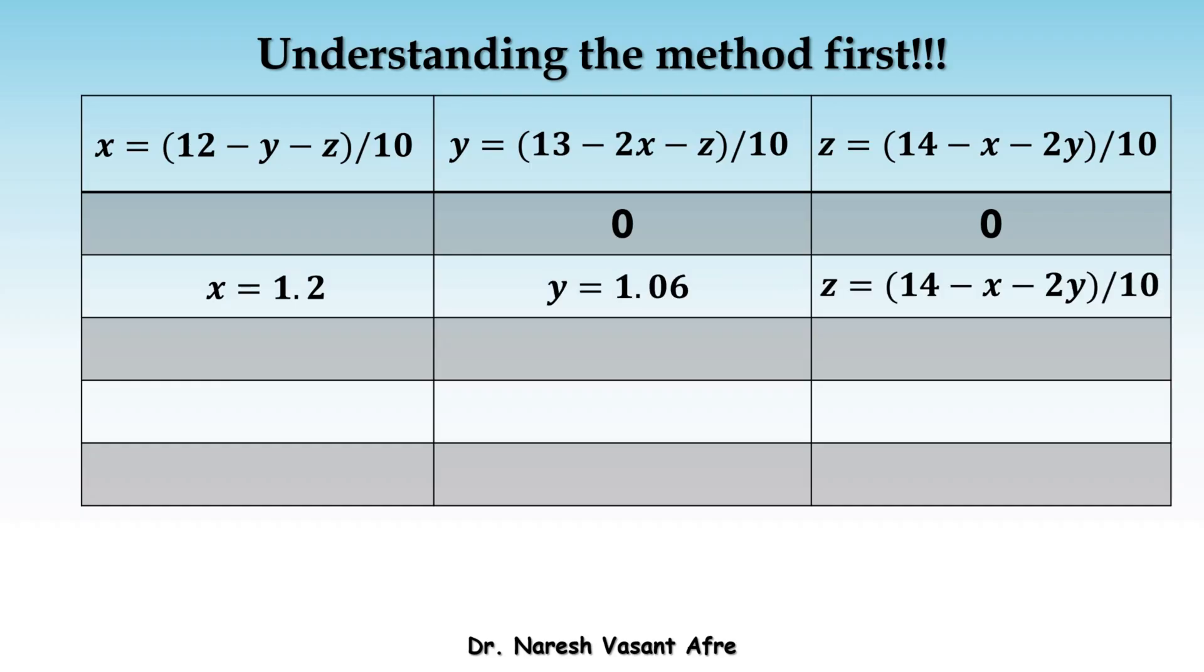Now, we use the latest value available of X and Y and we put it in the formula of Z. And this gives us Z is equal to 1.068. So, these are the values of XYZ in the first iteration.